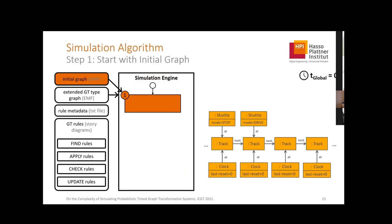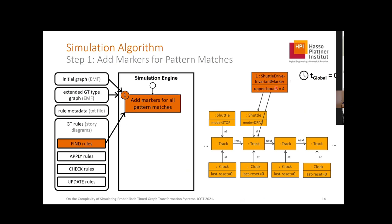In the first step, we load our model. Then we find all patterns that occur in this model and add markers for them. We have one invariant marker with an upper bound — this invariant has a time bound we compare against the global time, and it must always be true, so it can only exist until time four is reached. We also have one drive rule marker: a shuttle with two empty tracks ahead of it, with some time constraints.